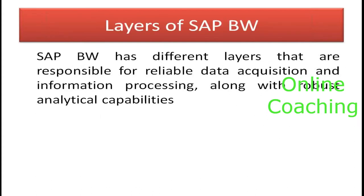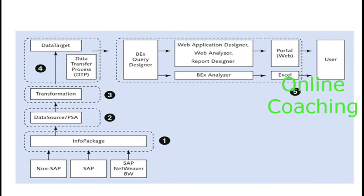Now let's talk about how data will be loaded into BW. There are certain layers in the architecture of SAP BW that help the loading process run smoothly step by step — these are the layers of BW. BW has different layers responsible for reliable data acquisition and processing along with robust analytical capabilities. There are two main data sources: SAP data source (your SAP ERP) and non-SAP data sources such as Oracle, SQL, Microsoft Excel, Microsoft Access, flat files, or any other database.